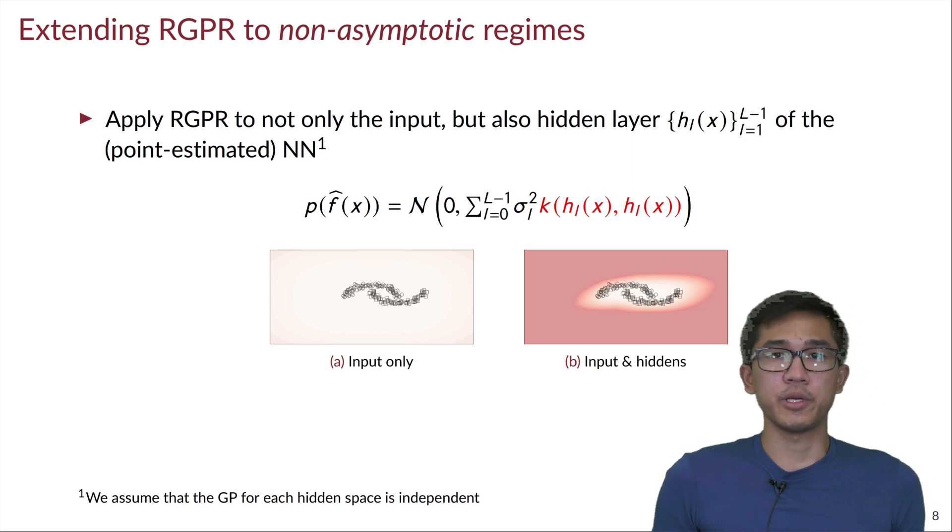RGPR can be extended further by leveraging the information carried in the pre-trained Bayesian ReLU network that we assume. So we can put GP priors on each input and also hidden spaces induced by this pre-trained network, and then we arrive at this GP prior that we can use instead in RGPR, while still retaining the post-hoc formulation.